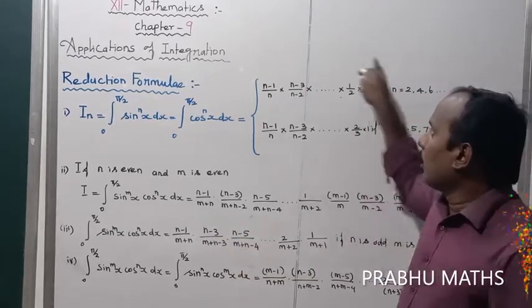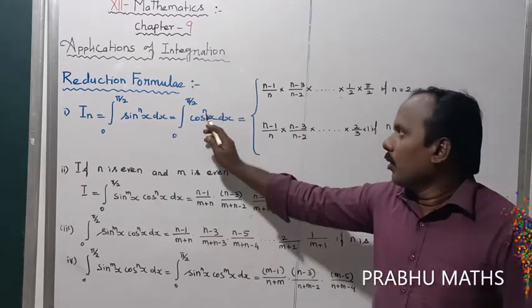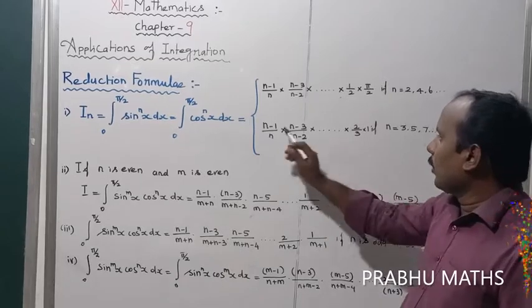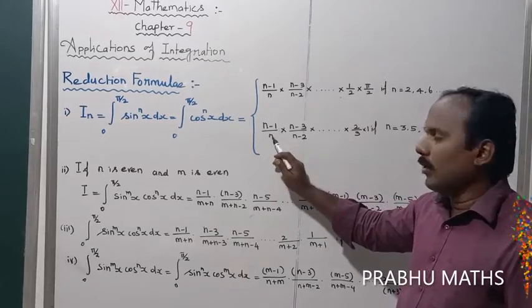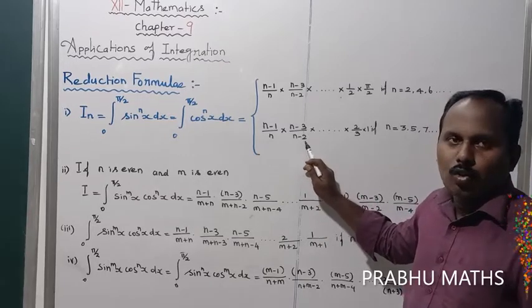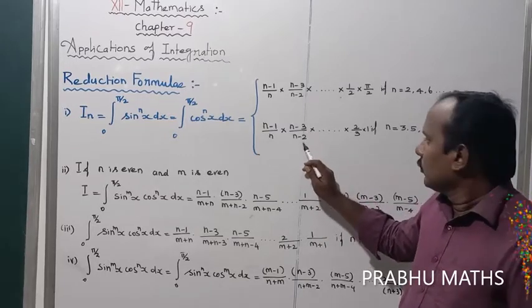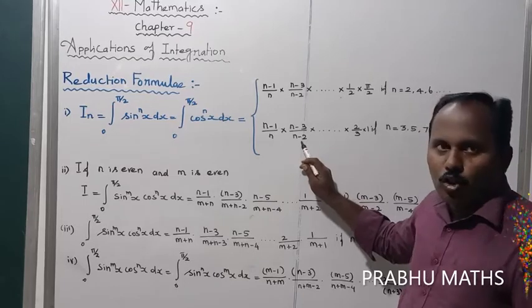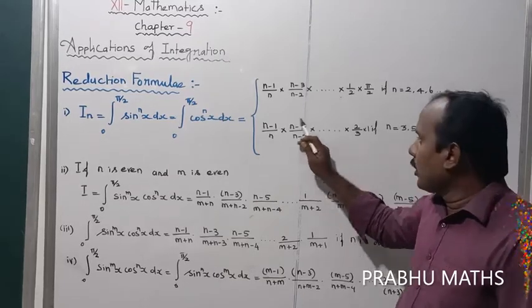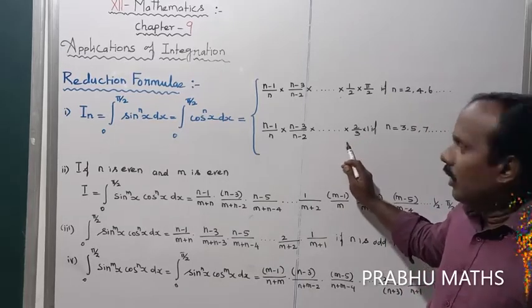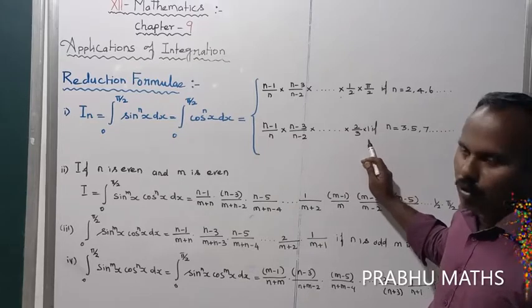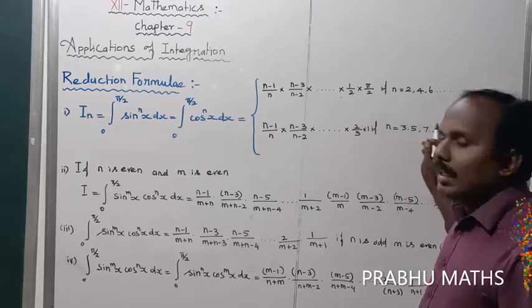The formula, suppose power 5. 5 is an odd number, so apply the odd number formula: (5-1)/5 is 4/5, (5-3)/(5-2) is 2/3, then 2 by 3 mark, multiply, apply 2/3.